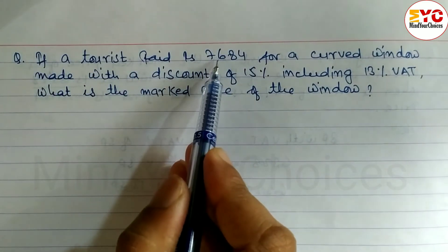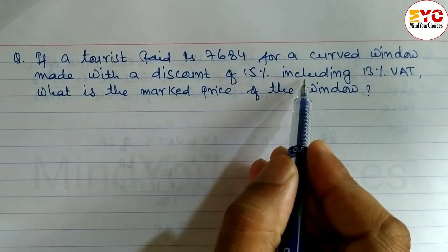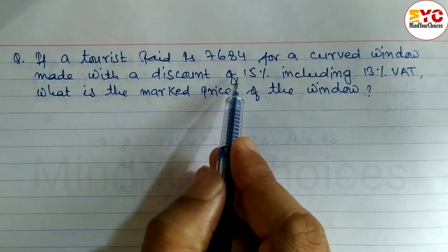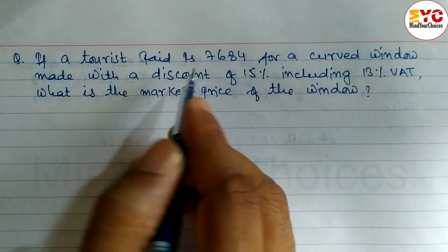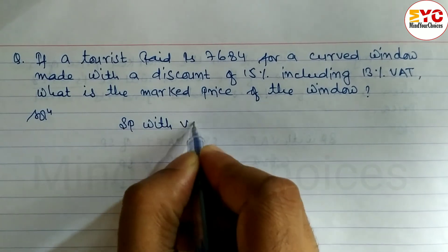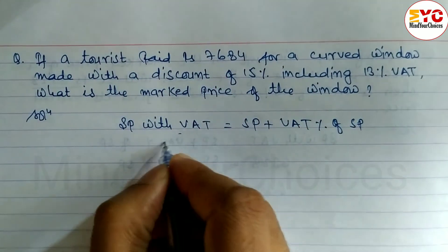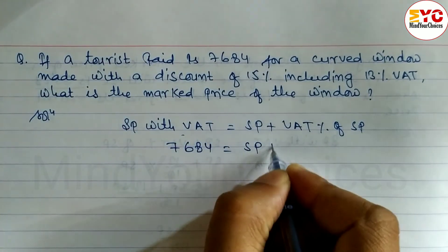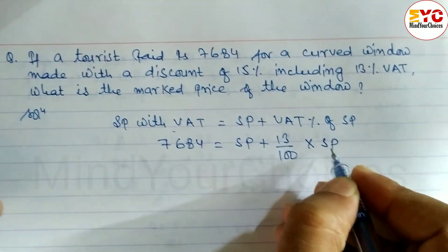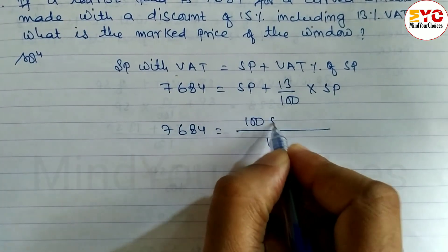If a tourist paid rupees 7,684 for a carved window made with 15% discount including 13% VAT, what is the mark price of the window? Here 7,684 is paid with discount and including 13% VAT. So SP with VAT formula: SP with VAT equals SP plus BAT percent of SP. So 7,684 is equal to SP plus 13%, meaning 13 divided by 100 into SP.